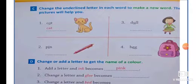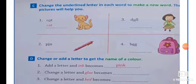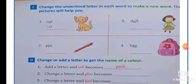The next one is exercise number C. Change the underlined letter in each word to make a new word. The picture will help you. The first one is a cat. Cat ka spelling kya hote hai? C, A, T, cat. Next one is pen. P, I, N, pen hote hai? It's called pin.